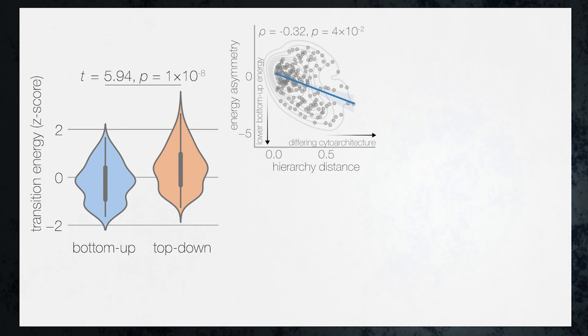This tells us that not only were bottom-up state transitions easier to complete compared to top-down, but also that these asymmetries were largest when brain states' profiles of cytoarchitecture were maximally different.